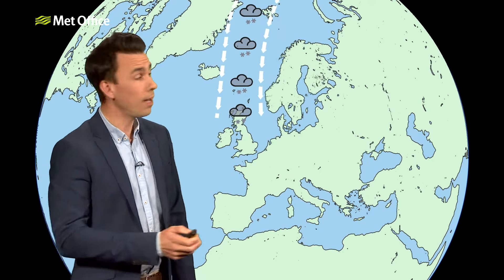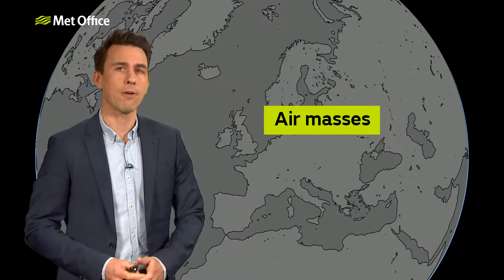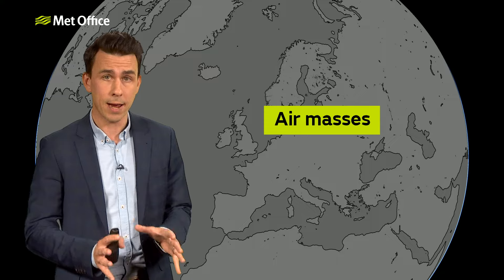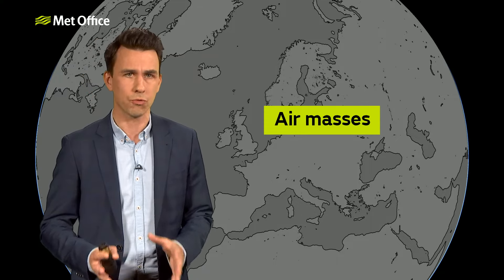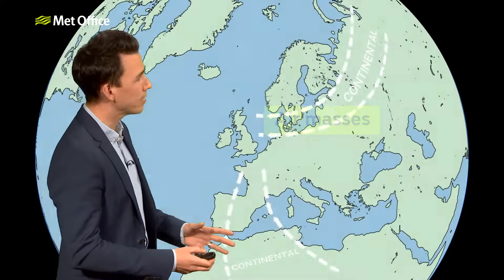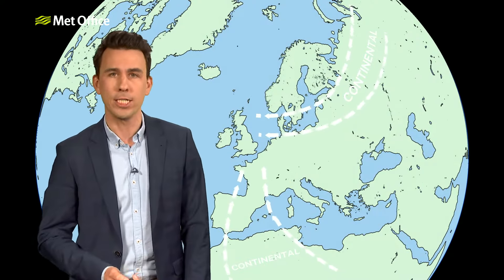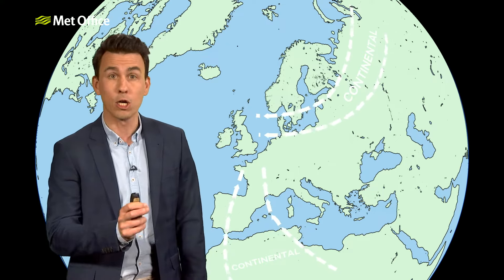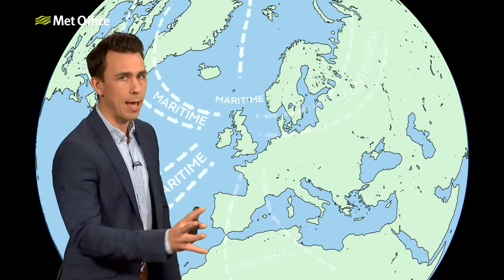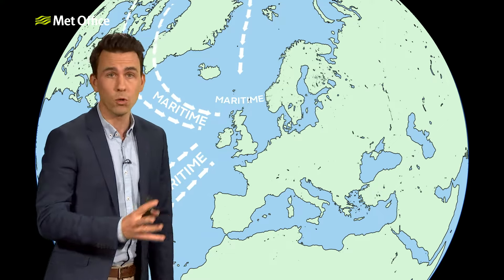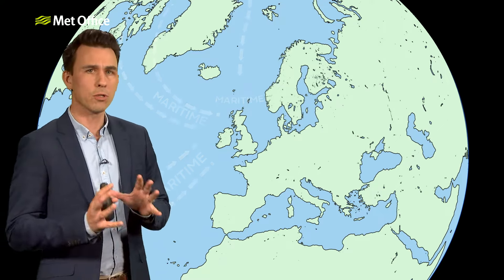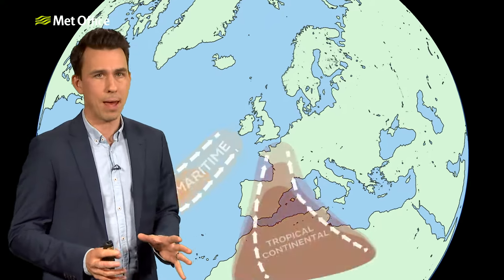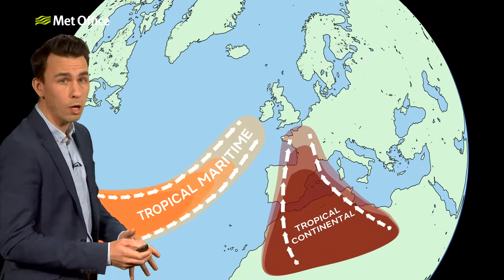These are air masses — bodies of air with fairly uniform temperature and humidity as a result of spending time in a particular source region. Dry air masses come from the south or the east: Africa, Europe, Asia. That's why we call these continental. Moist air masses come from the west or the north. These are known as maritime air masses. Both continental and maritime air masses can be warm or cold.